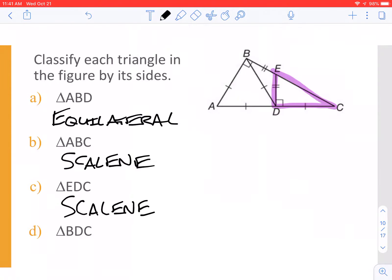And then, last but not least, we have BDC. So we're going to highlight that for you. B, D, C. We look at the sides, and we see that these both have one, meaning they are the same, they are congruent. So that will be isosceles.